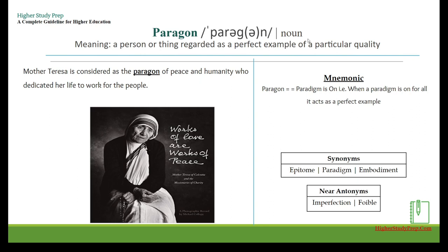Paragon — it's a noun which means a person or thing regarded as a perfect example of a particular quality. For example, Mother Teresa is considered the paragon of peace and humanity, having dedicated her life to working for the people. The mnemonic: 'paradigm is on' — when a paradigm is on for all, it acts as a perfect example. Synonyms: epitome, paradigm, embodiment. Near antonyms: imperfection, foible.